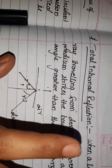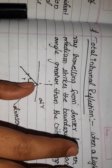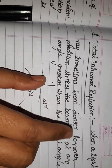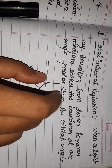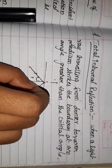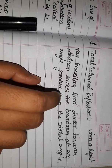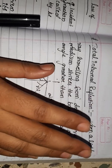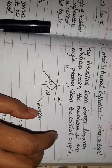Total Internal Reflection is used in optical fibers. Optical fibers have two types: plastic optical fibers and glass optical fibers. Plastic optical fibers are lower in cost. Glass optical fibers have a higher cost of transmission. Optical fibers are used in communication applications.